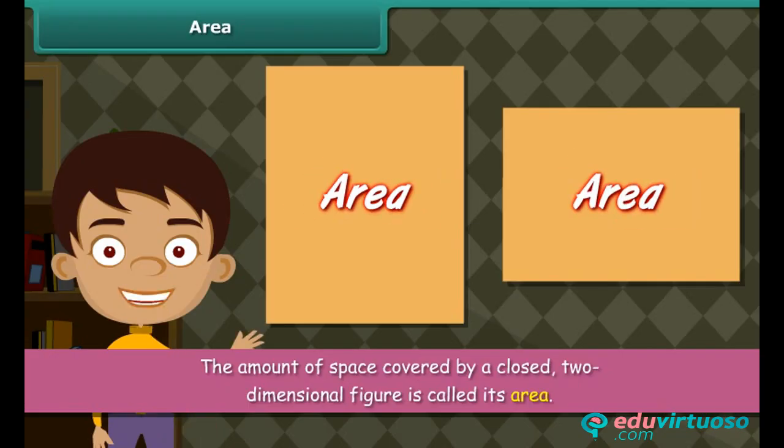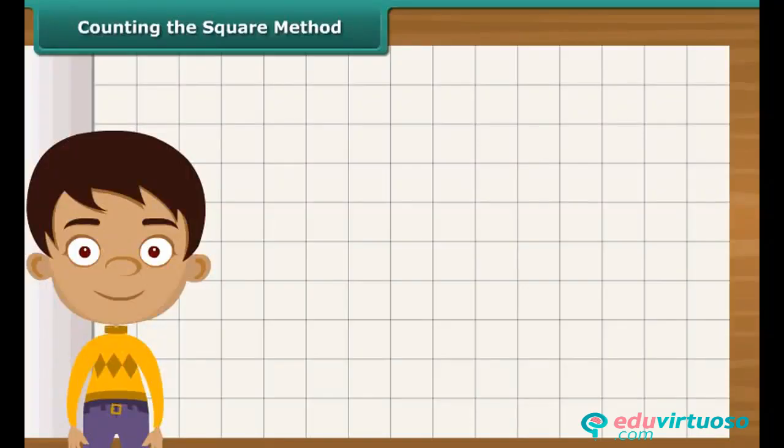Area of one such figure can be different from the area of another such figure. Now, let us calculate area with the help of a simple method. It is known as counting the square method.